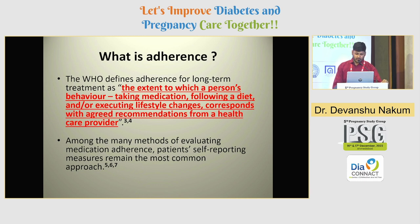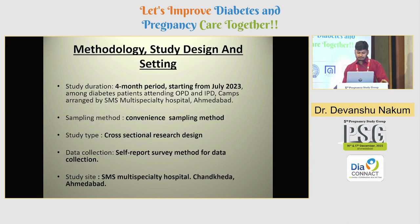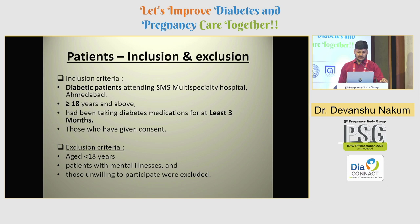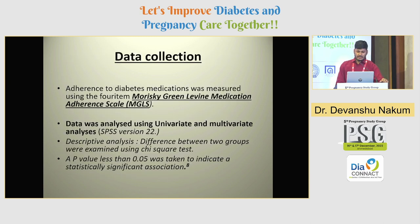Regarding methodology, the study duration was a four-month period starting from July 2023. The sampling method was convenient sampling. The study type was a cross-sectional research design. Data collection used a self-report survey method at SMS Multi-Speciality Hospital, Ahmedabad. Inclusion criteria included diabetic patients aged 18 or above, on medication for at least three months, who provided consent. Exclusion criteria included patients under 18, those with mental illness, and those unwilling to participate. Data was collected using the Morisky-Green-Levin Medication Adherence Scale (MGLS) and analyzed using univariate and multivariate analysis in SPSS version 22. The chi-square test was used, with a p-value less than 0.05 considered statistically significant.